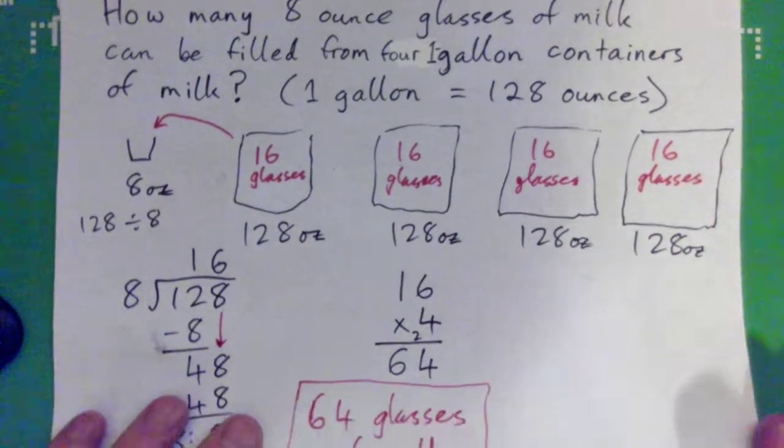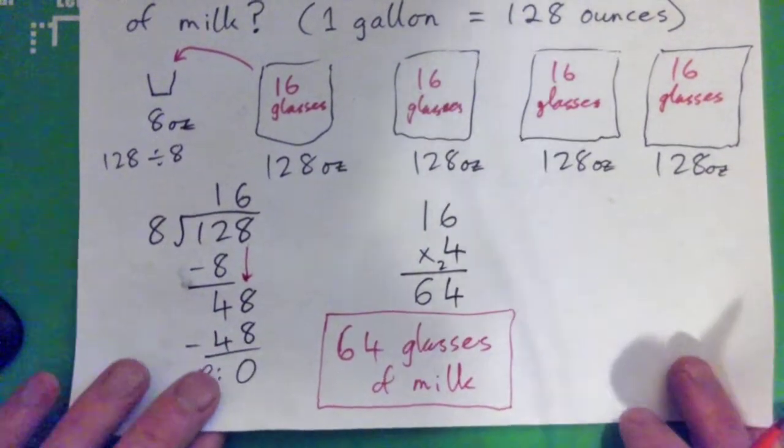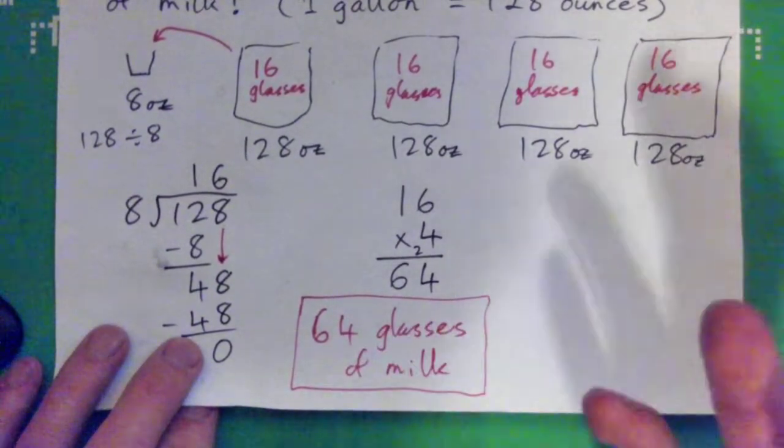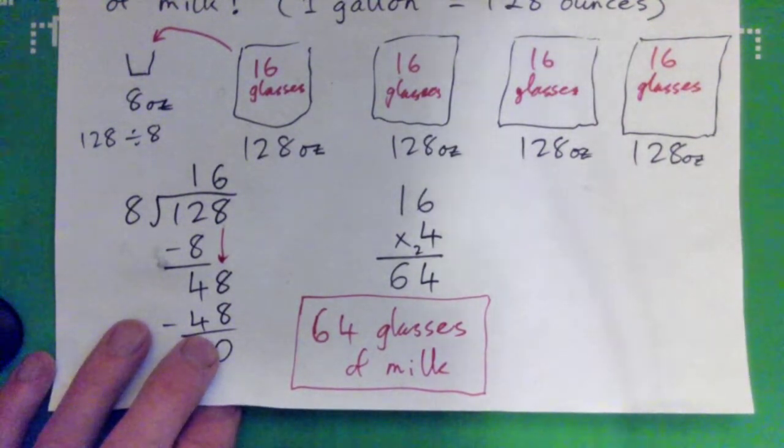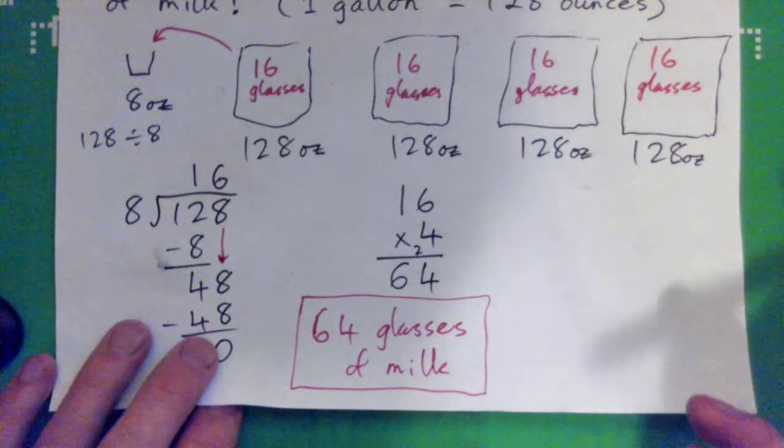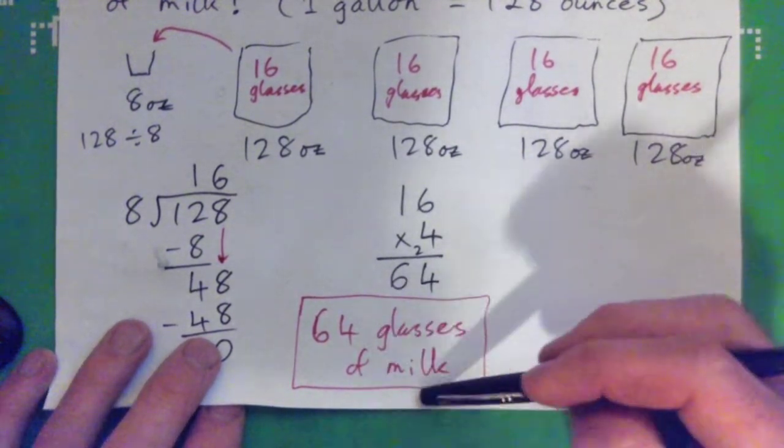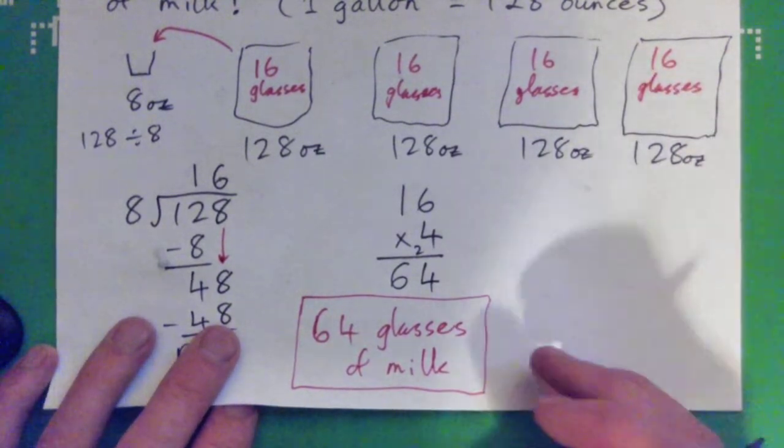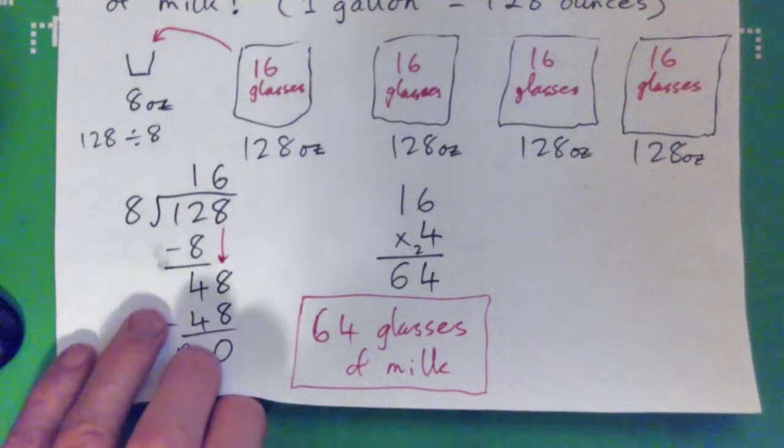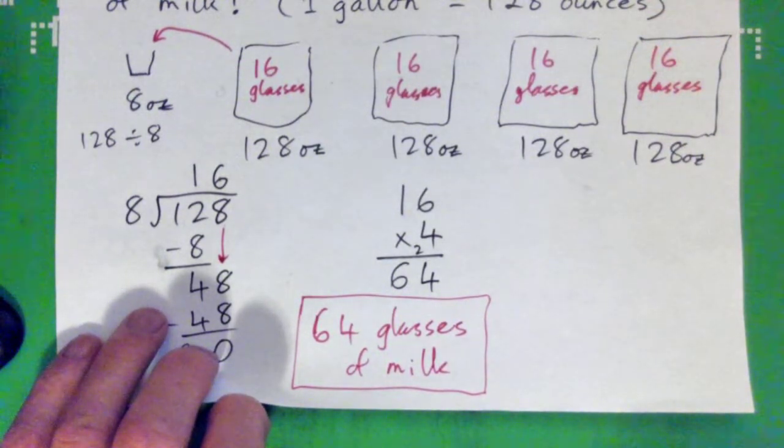64. So in other words, if every kid was to get one glass, that would be 64 kids getting a glass of milk. Or 64 people or whatever. Right? You don't have to put all... Look, we can get 64 glasses of milk from the four gallons. Basically. That's all you have to say. We can get 64 glasses of milk from the four gallons. All right.